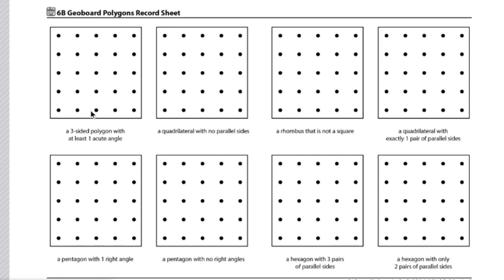I will read the polygon descriptions and build at least one example of each kind of polygon on the GeoBoard. For example, if I am going to do a three-sided polygon with at least one acute angle, I would make a shape like this on the GeoBoard.